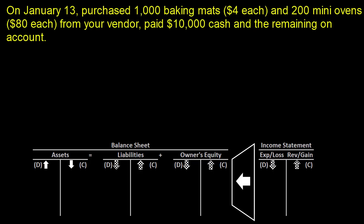This is a journal entry problem for the purchase of inventory on both cash and account. On January 13th, we purchased 1,000 baking mats at $4 each and 200 mini ovens at $80 each. From your vendor, you paid $10,000 in cash and the remaining on account.